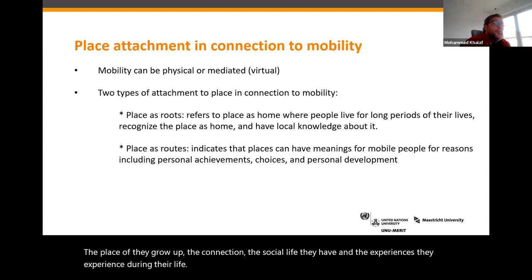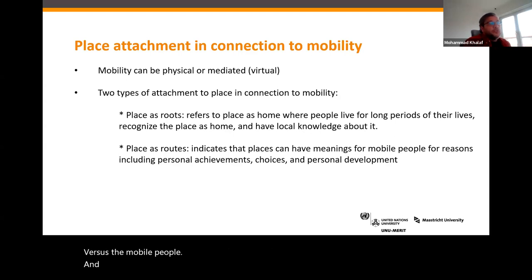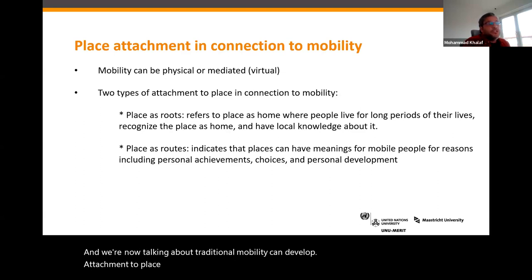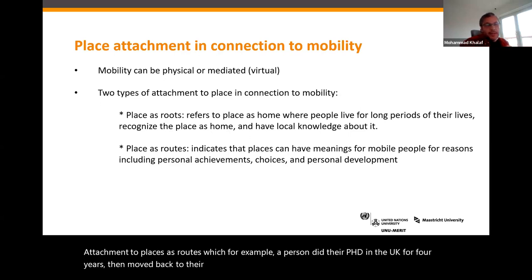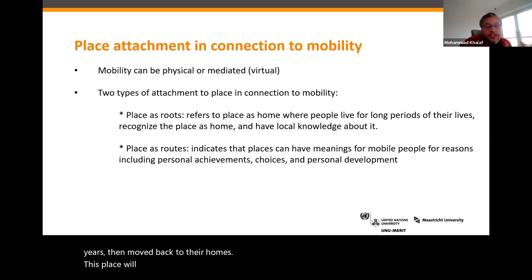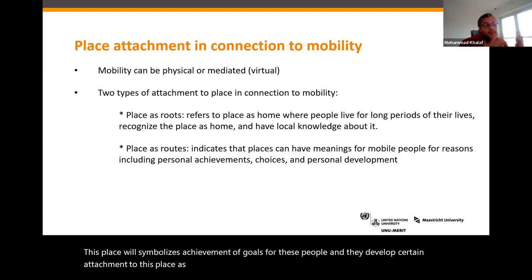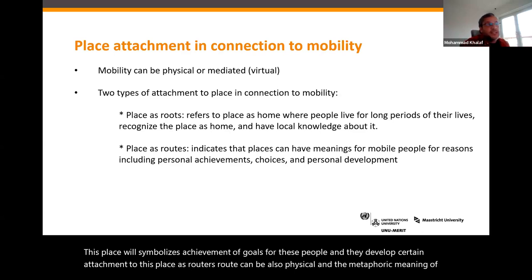Through traditional mobility, people can also develop attachment to places as routes. For example, a person who did their PhD in the UK for four years then moved back home — that place symbolizes achievement of goals, and they develop attachment to it as a route. Route can also have a metaphorical meaning — a route towards success or towards a goal.